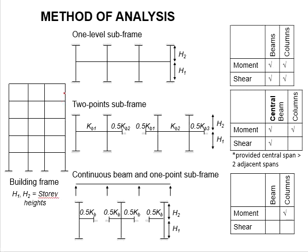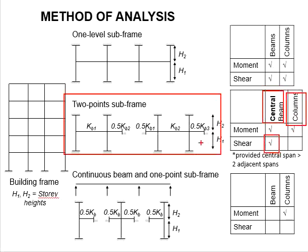The two-point subframe method will give you the moment for the beams and columns and the shear of the center beam.